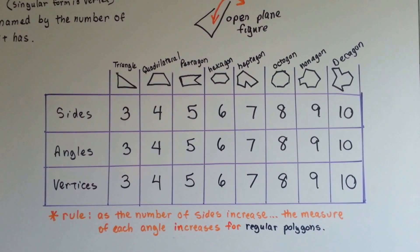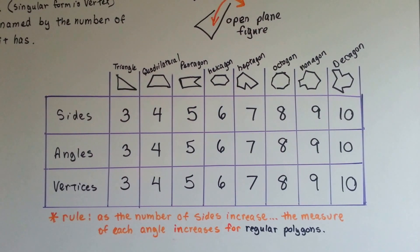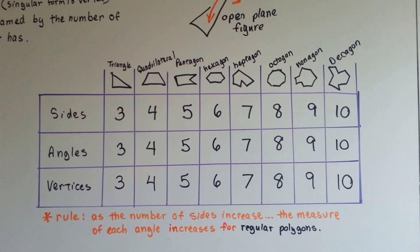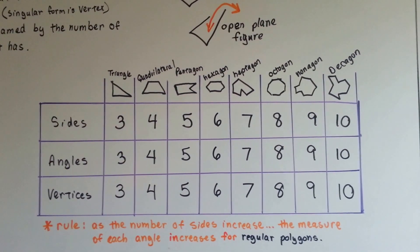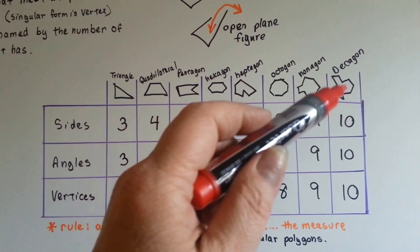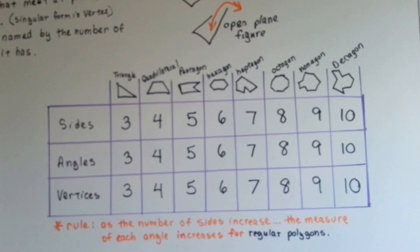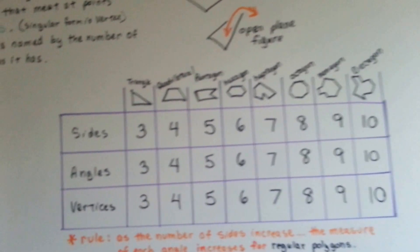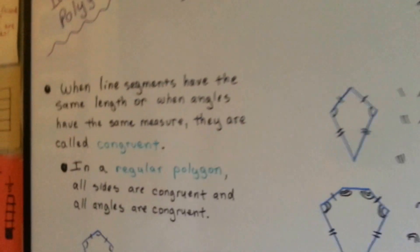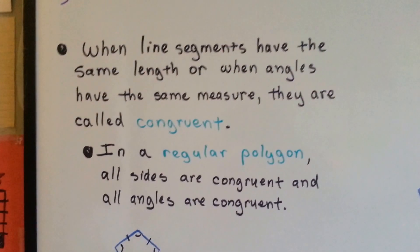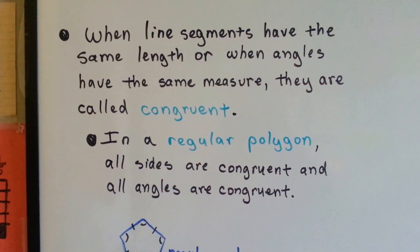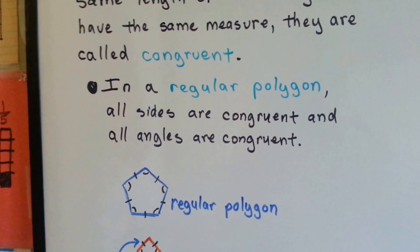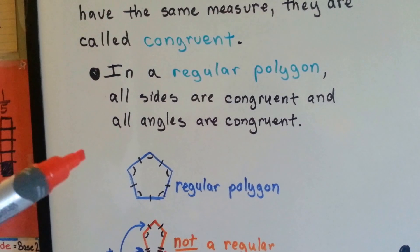There's a rule that says as the number of sides increases, the measure of each angle inside increases — for regular polygons. This is not a regular polygon. A regular polygon has all sides equal. When line segments have the same length or when the angles have the same measure, they're called congruent. In a regular polygon, all the sides are congruent and all the angles are congruent.